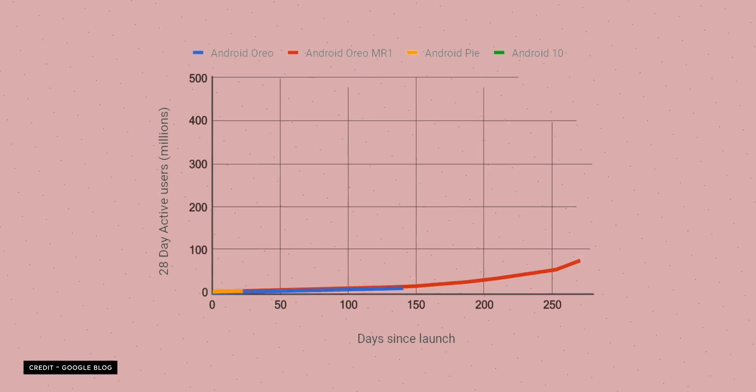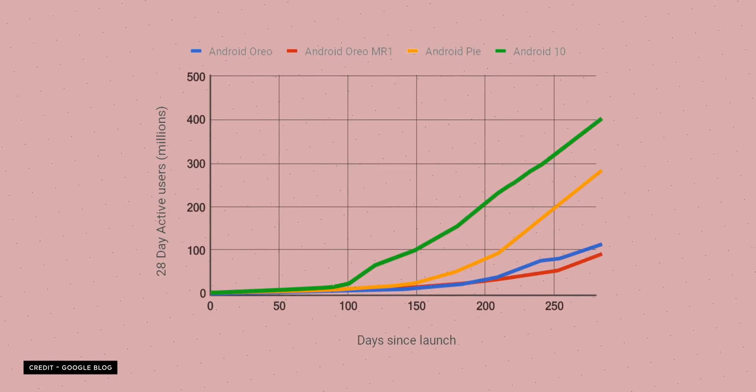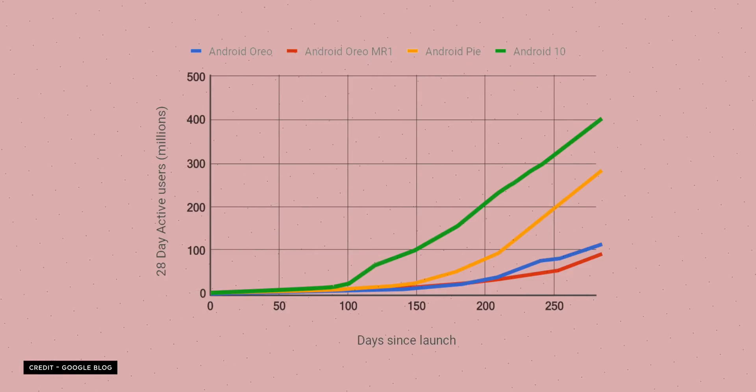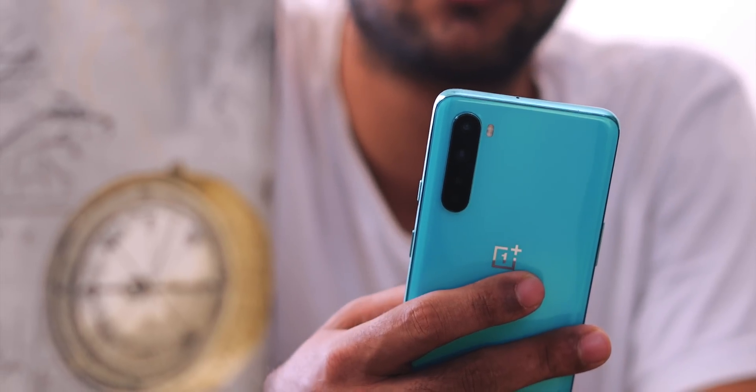Going by the history of Android updates, things have improved but still the majority of you would have to wait any time around 200 to 250 days. So while you're waiting for Android 11, how about you get most of the features right now — on whatever Android version you are. Here's Pitik from techvisor.com and this is how to get Android 11 features on pretty much any Android phone.